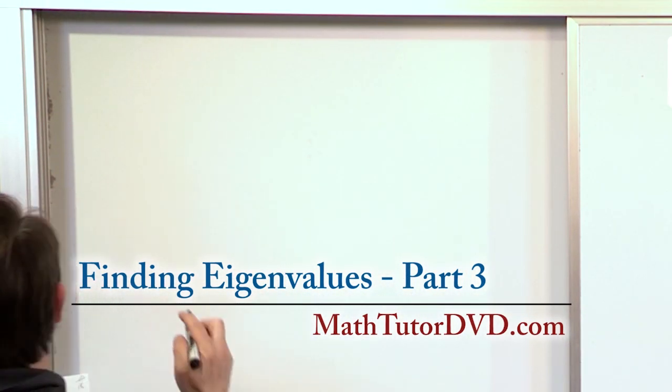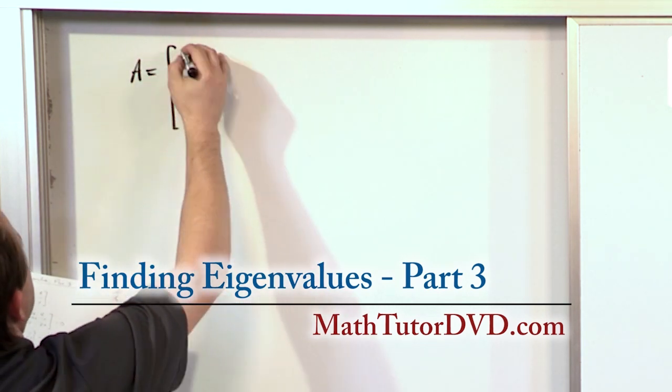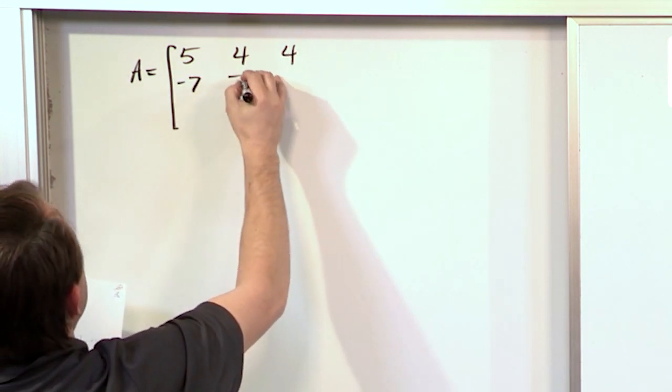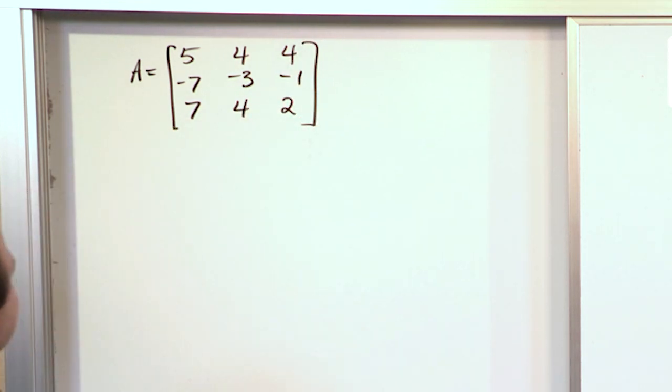You'll find that the process is the same, but sometimes the details are a little tougher. So the matrix here, 5, 4, 4, negative 7, negative 3, negative 1, 7, 4, 2. So that is our matrix.